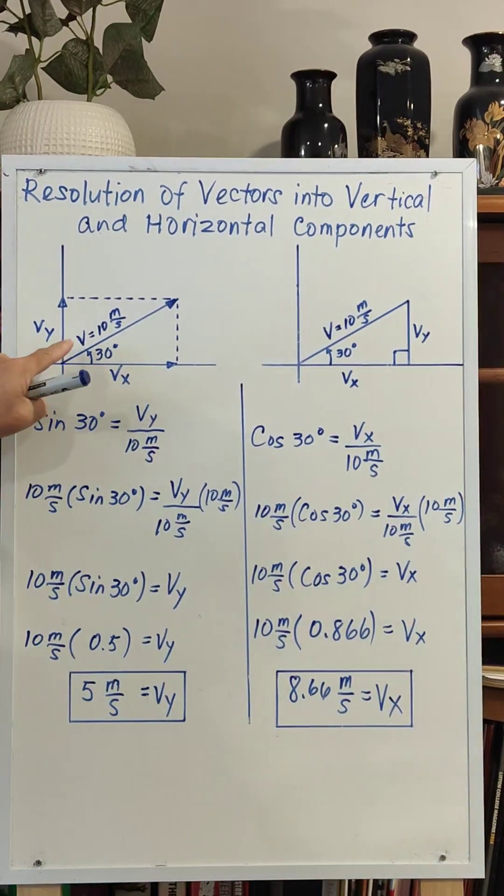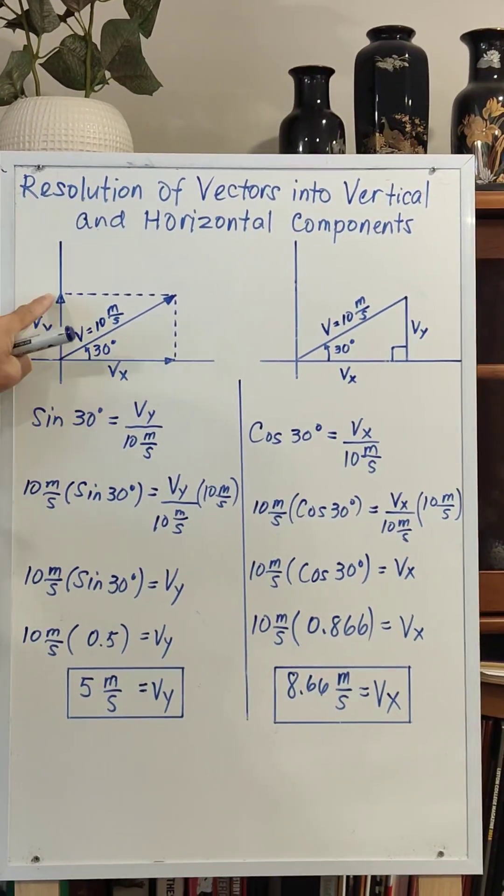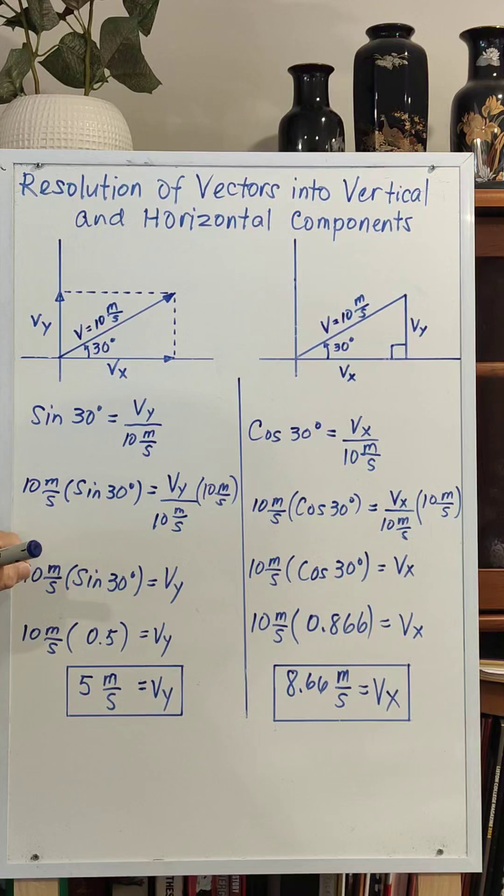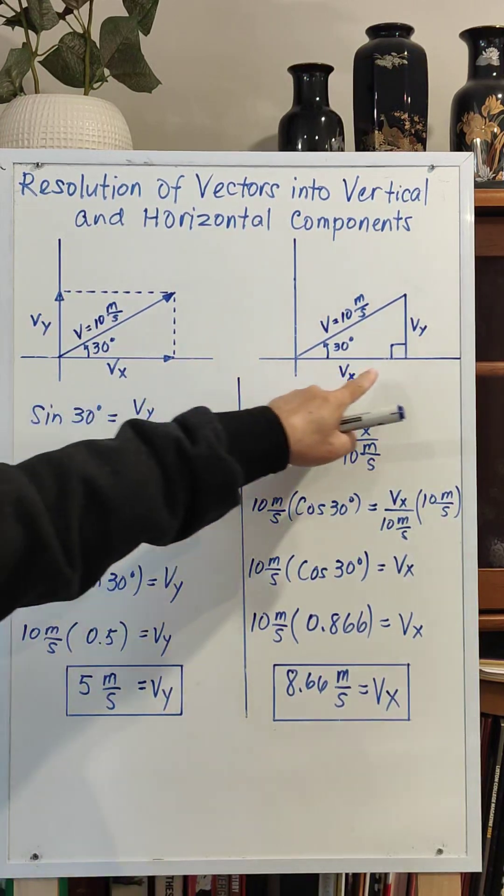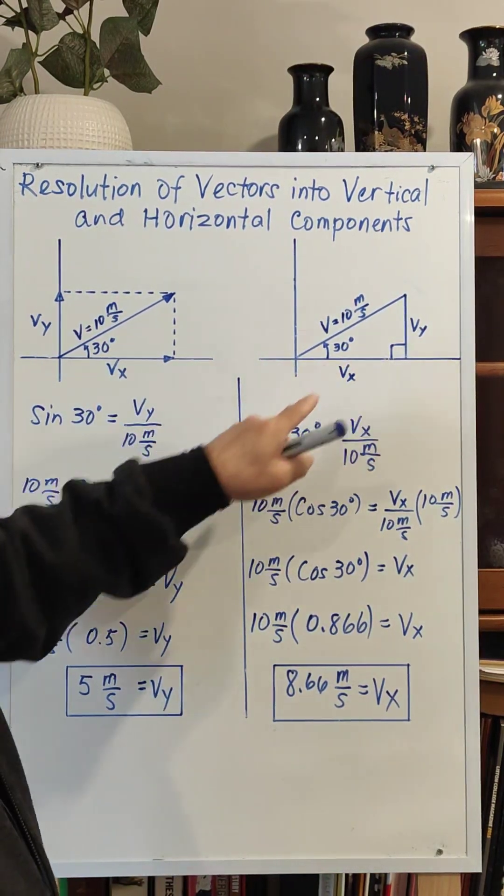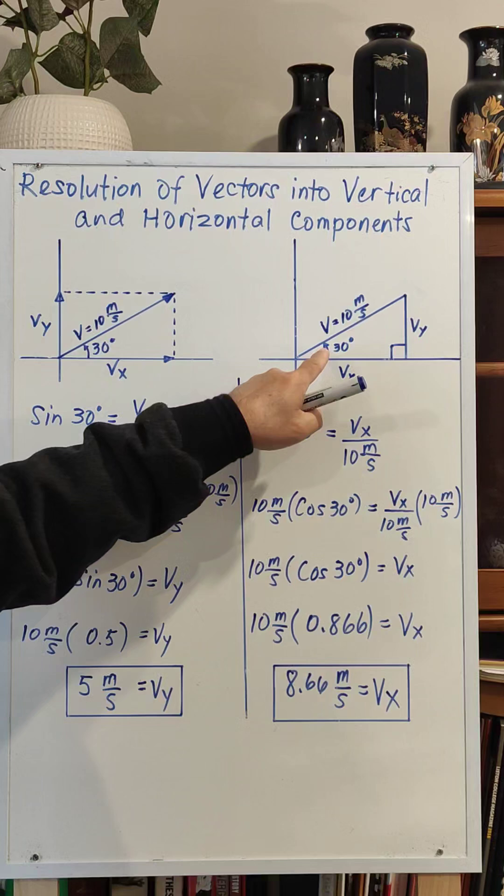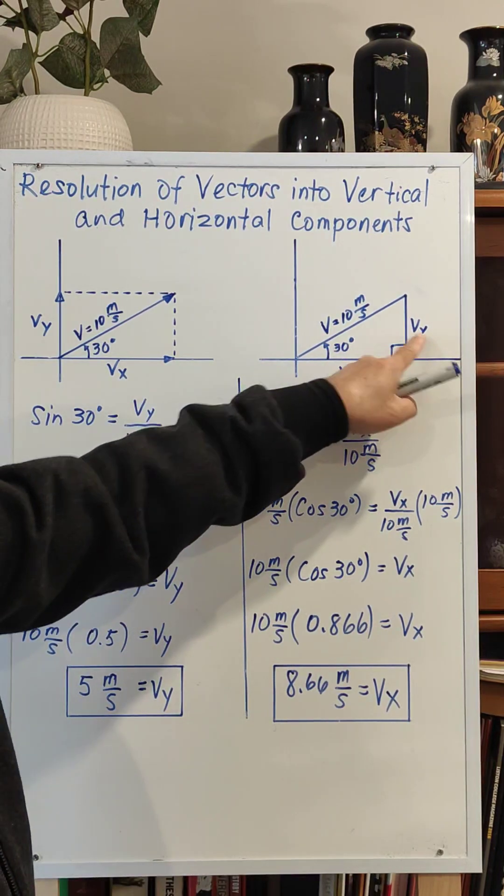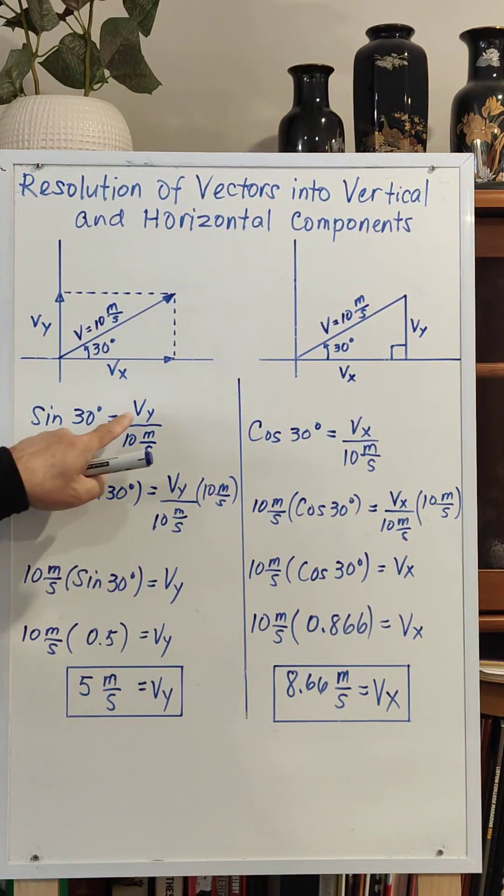Resolve this vector, which is a velocity of 10 meters per second, into its vertical and horizontal components. We can transform it into a right triangle, so using trigonometry, sine of 30 is equal to opposite over hypotenuse, which is vy over 10 meters per second.